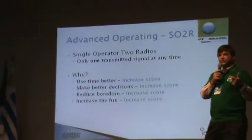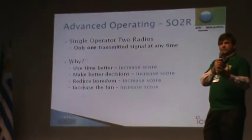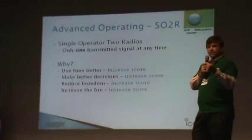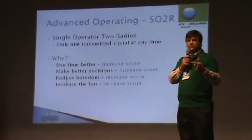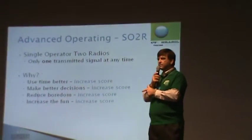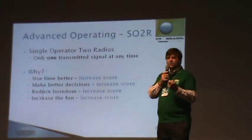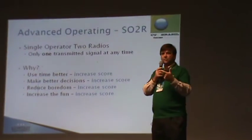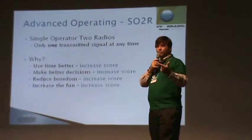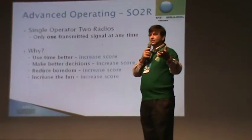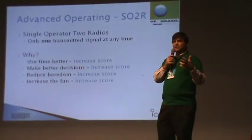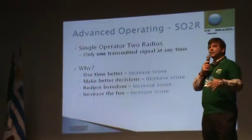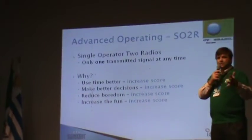Now for something a bit more advanced. In single operator contesting there is one operator, and the clock is constantly moving with the goal of finding the next contact. One way to improve your score is to use two radios — SO2R, single operator two radio. You have two ears, so you put one radio in each ear and listen to two things at the same time. This allows you to operate in two places at once, so while you're waiting on one radio, you can be working the other.